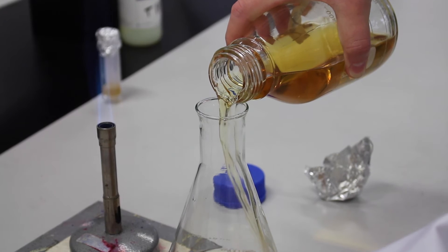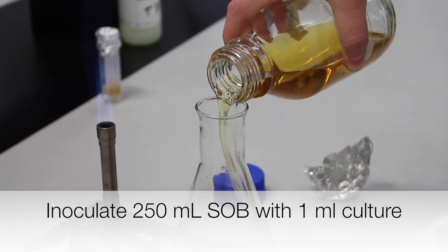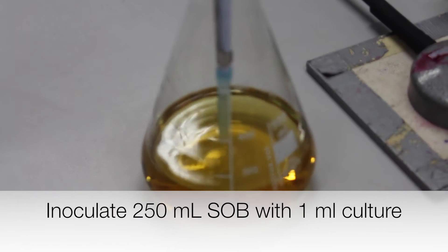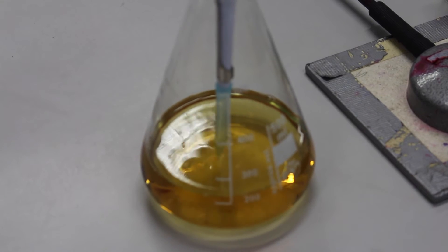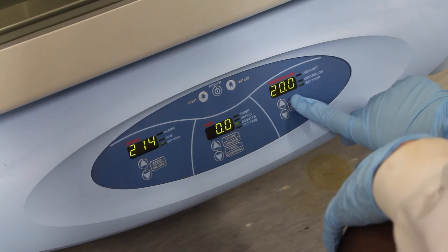To prepare competent cells, 250 ml of SOB medium is inoculated with 1 ml of the cells prepared earlier. The culture is allowed to grow at 20 degrees Celsius for about 16 hours until the optical density measured at 600 nm equals 0.3.